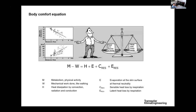In the 1960s, a researcher linked all these parameters and came up with a body comfort equation. The goal was to balance the heat produced in the body against the heat lost. So your metabolism — what you produce — equals all the losses in your body. This forms the basis of the body comfort equation.